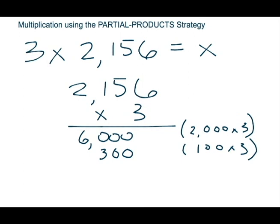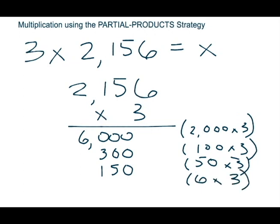Moving on — I'm going to go to the next largest number, which is the 5 because it's in the tens place. If you have 5 tens, you have 50. I'm going to write 50 and multiply that by the 3, the bottom factor. 50 times 3 is 150, and again I'm going to make sure to line up each of those digits in the correct place. If you don't do that, when you go to add at the end you're going to get the wrong answer, so you need to make sure you're writing each digit in the correct place value. And lastly I'm going to go to the 6 — the 6 is smallest because it's in the ones place. 6 ones is 6, multiplying that by 3 as well. 6 times 3 is 18.